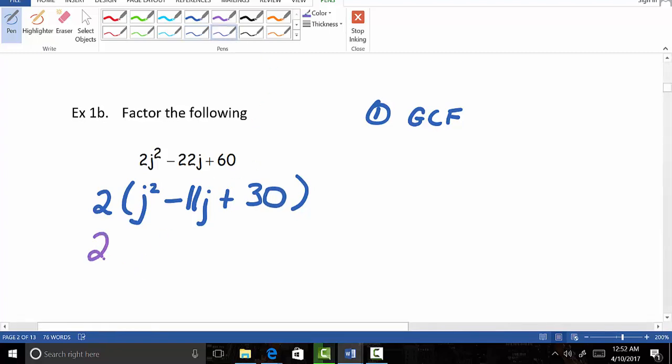Moving on then, we still have our 2 out in front. That's not changing. Breaking down this trinomial into a set of two different binomials, we know that because our coefficient here is just 1 for the j squared, that we just have a j times another j in our two parentheses.